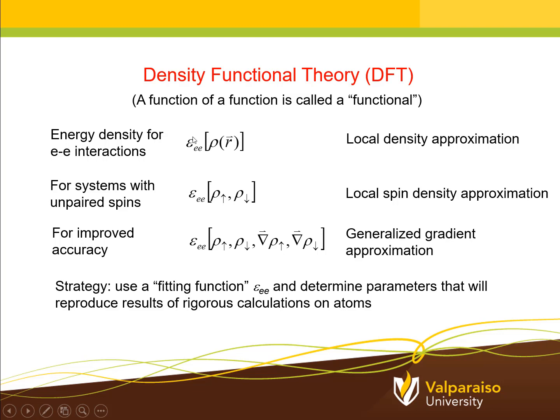This simple kind of representation is called the local density approximation, because the electron-electron energy density only depends on the value of the charge density at all points in space. We can make this a little bit more accurate in order to take into account the properties of systems where some of the electron spins are not paired up. So when this electron-electron energy density is expressed as a function separately of the spin-up and spin-down electron densities, this is called the local spin density approximation.